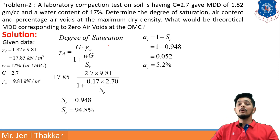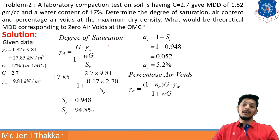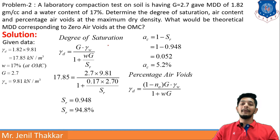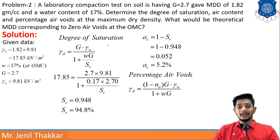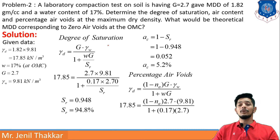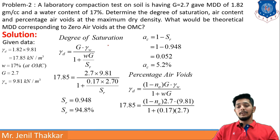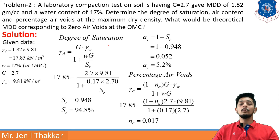For percentage air voids, I use the formula: γd = (1 − na)·G·γw / (1 + wG). This formula also comes from index properties. Substituting γd = 17.85, G = 2.7, γw = 9.81, w = 0.17, I get na = 0.017, which is the percentage air voids.